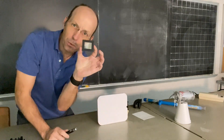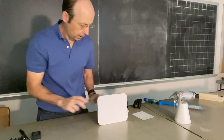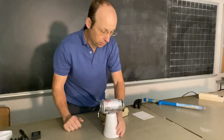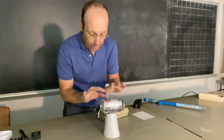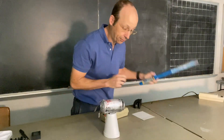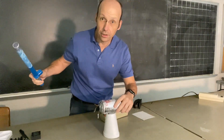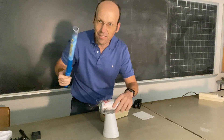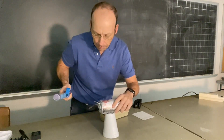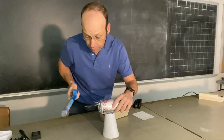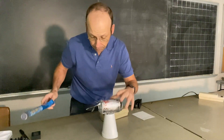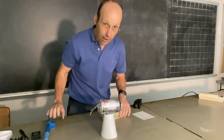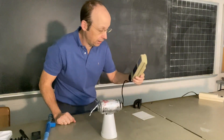Now we have something like this — a little homemade electroscope I made. When it gets electrically charged, these things spread out. Let me charge it up. I'm holding on to it to make it negatively charged. Okay, I think that's good enough.